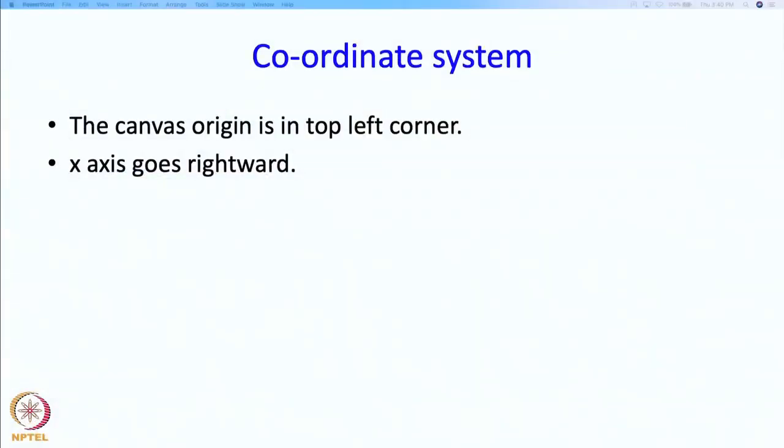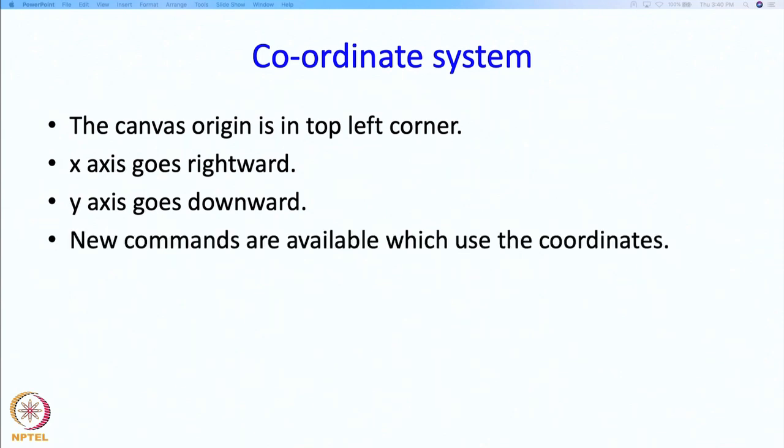The drawing area or canvas has a coordinate system. The canvas origin is in the top left corner. The x-axis goes rightwards as you are normally accustomed to. The y-axis goes downward rather than upward as you might be more commonly using in math.